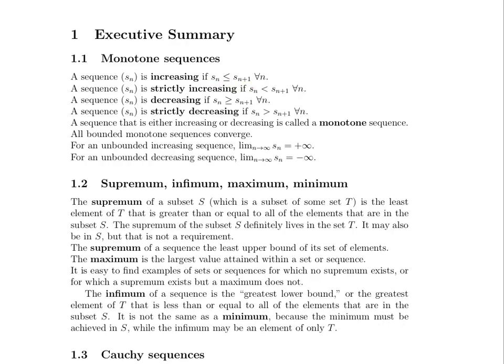Now let's grow our vocabulary some more. A lot of the time when we're talking about sequences, we're talking about the set of all the values in the sequence. The supremum of a subset S, which is a subset of some set T, is the least element of T that is greater than or equal to all of the elements in S. When talking about the supremum of a subset, sometimes that value is part of the subset, and sometimes it's part of the larger set of which S is a subset.